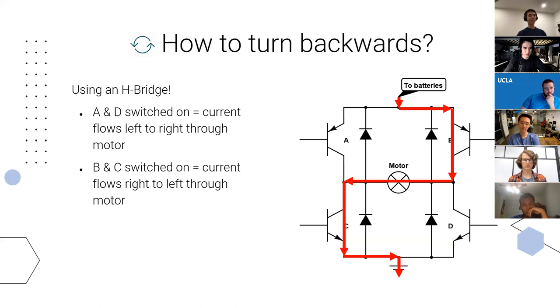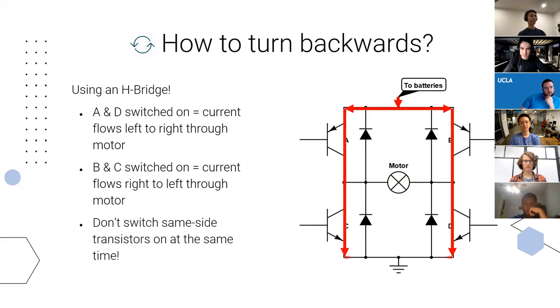Quick warning about H bridges. If you happen to turn on both transistors A and C or B and D at the same time, then we've essentially created a short circuit, and this happens and your batteries won't like you very much after you do that. So don't do it.